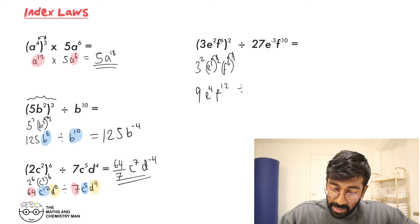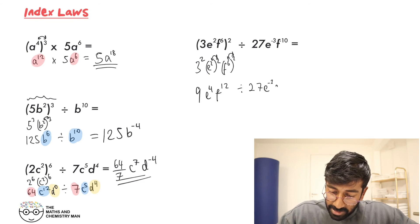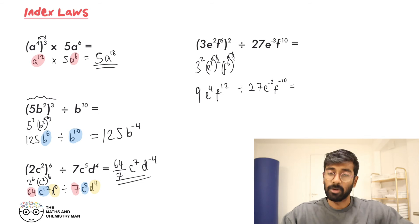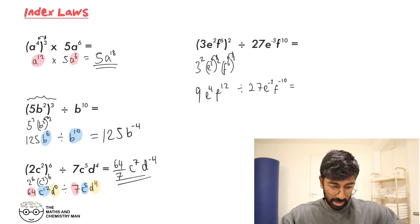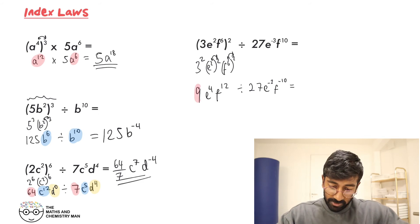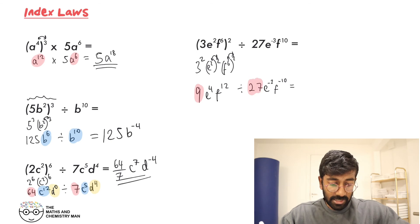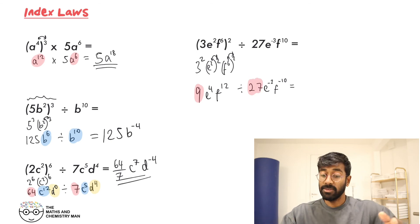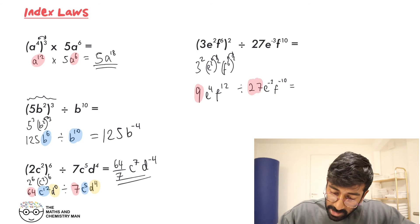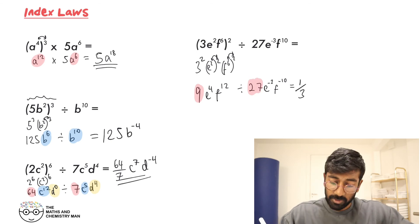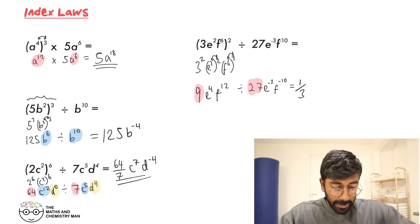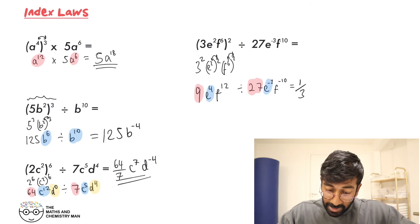And we're dividing that by 27 E to the minus 3 and F to the minus 10. Work out each bit individually. Start with 9 and 27: 9 divided by 27 is a third. Next: E to the power of 4 divided by E to the power of minus 3.